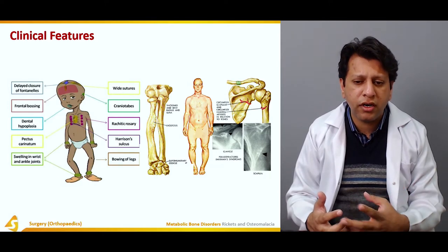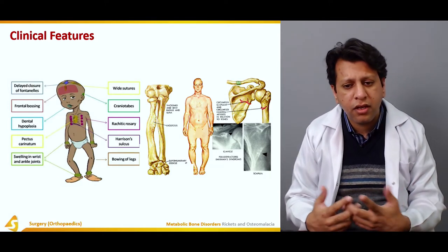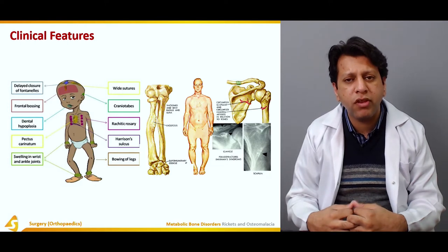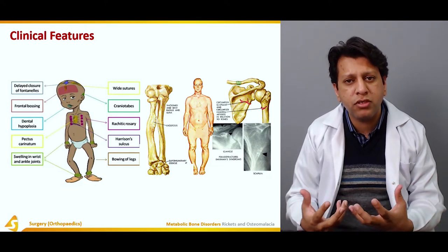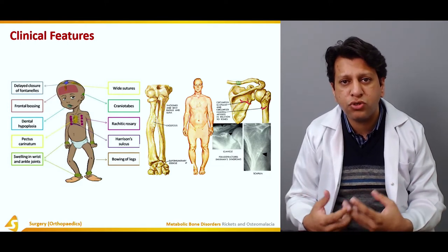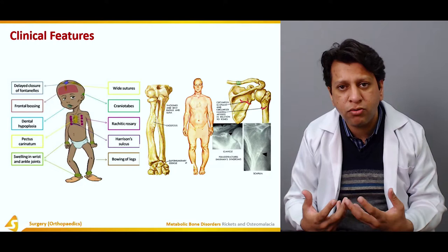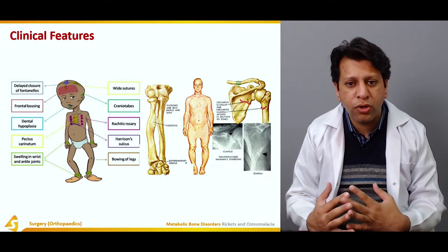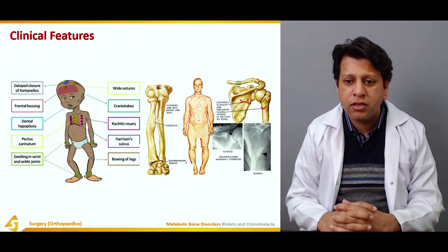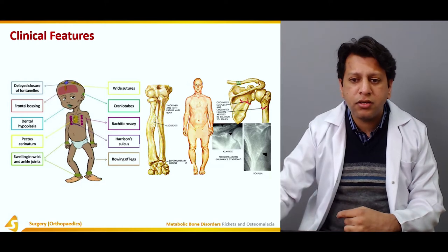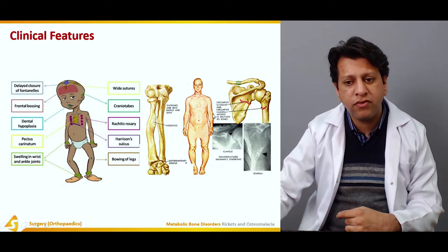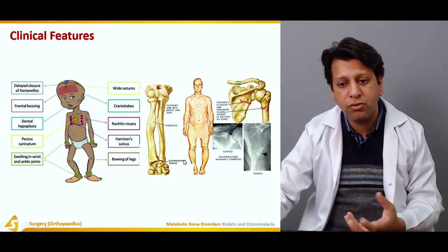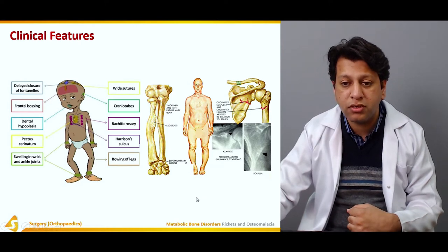There is swelling of the wrist and ankle joints, called cupping and fraying of the distal radius. Bowing of the legs occurs because the leg bones are not strong enough to bear the child's weight, resulting in bowing.